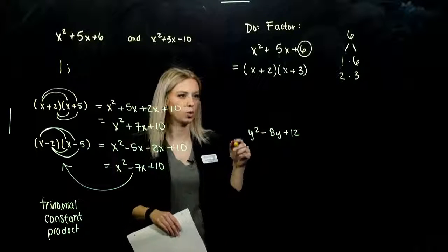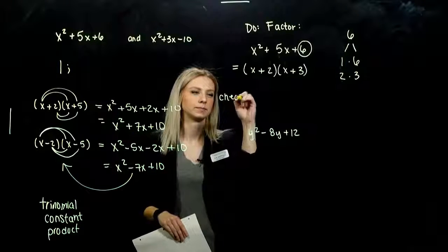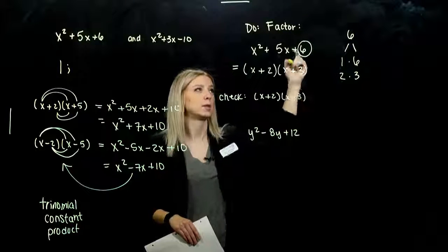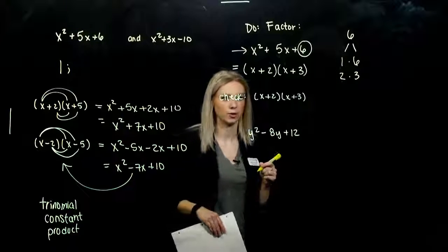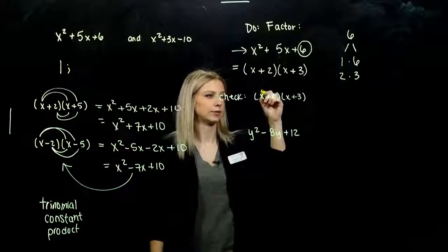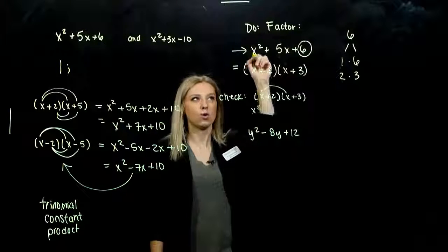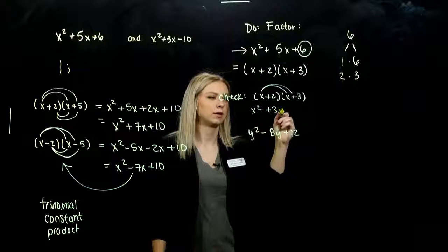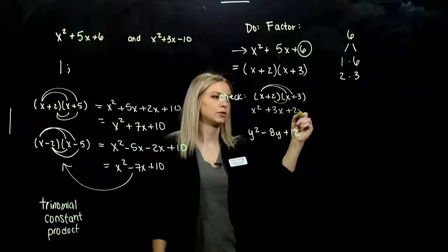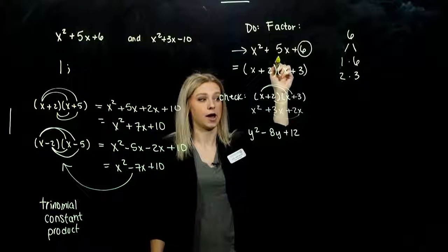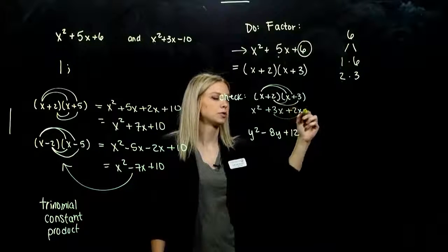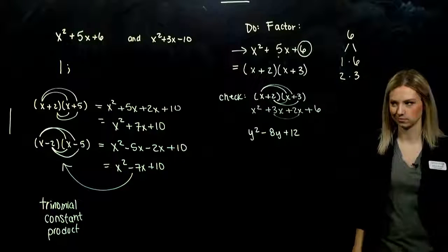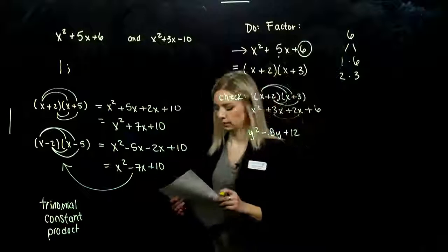We can always check by FOILing. So if I multiply this out, do I get back to my original trinomial? First gives me x squared. Outer, positive 3x. Inner, another 2x — combining to give me 5x. And 2 times 3, plus 6. So do we get our original trinomial? Yes. We always have a check.